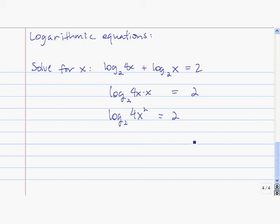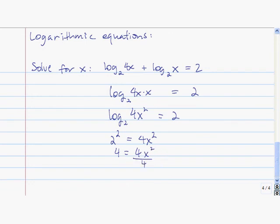By the definition of the logarithm, 2 raised to the second power is 4x squared. That's how I get the 4x squared out of the log — I rewrite it in exponential form. 2 squared is 4, so I have 4 equals 4x squared. Dividing both sides by 4, I get 1 equals x squared, so x is equal to either 1 or negative 1.